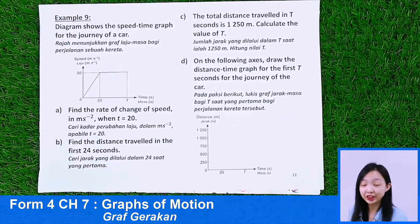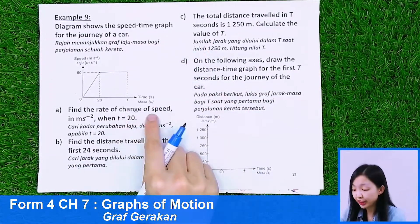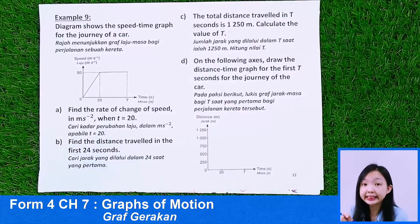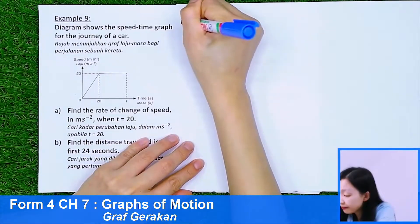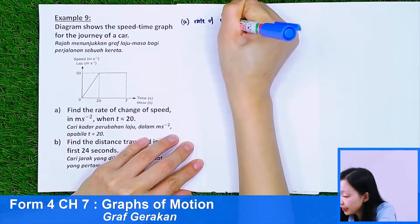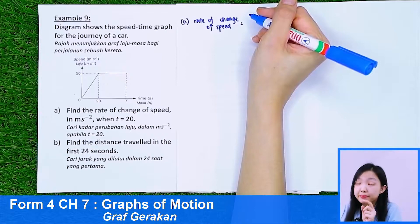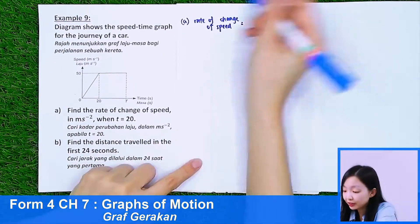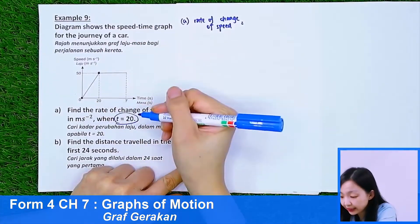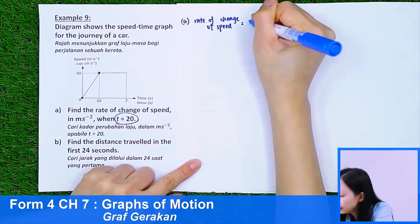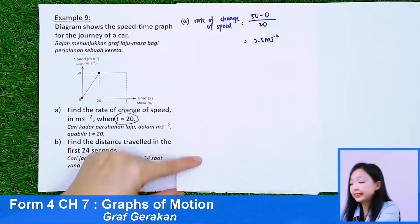Example 9: The diagram shows the speed-time graph for the journey of a car. Part A: Find the rate of change of speed in meters per second squared when t equals 20. Rate of change equals final speed minus initial speed divided by time: (50 minus 0) divided by 20 equals 2.5 meters per second squared.